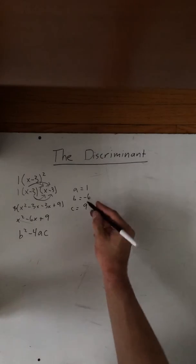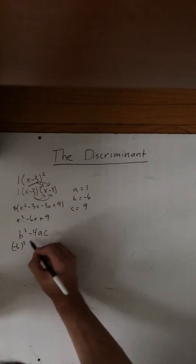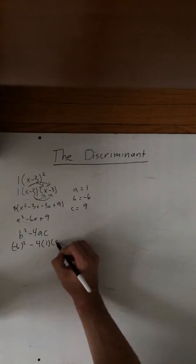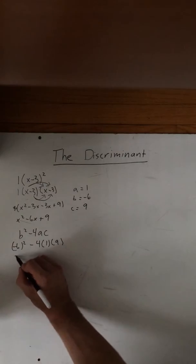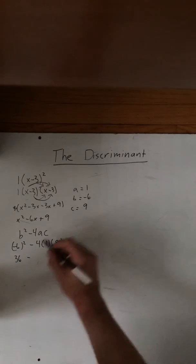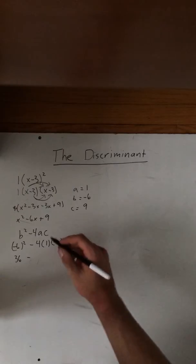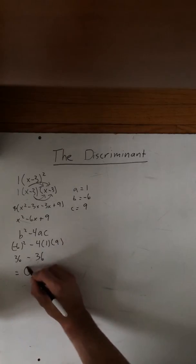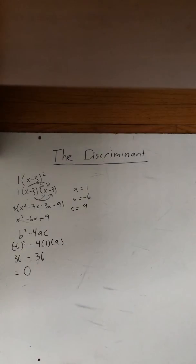So now we plug in our values here, so we have negative 6 squared minus 4 times 1 times 9. So this would be 36 minus 4 times 1 is 4 times 9 equals 36 equals 0. When the discriminant value is 0, like we have just found, that means that there is only going to be one x intercept.